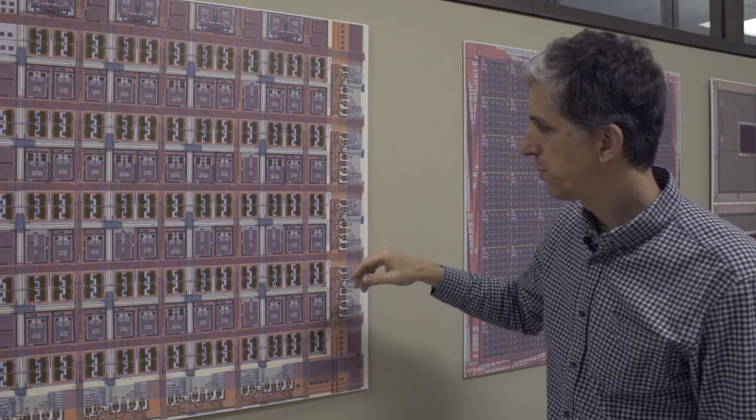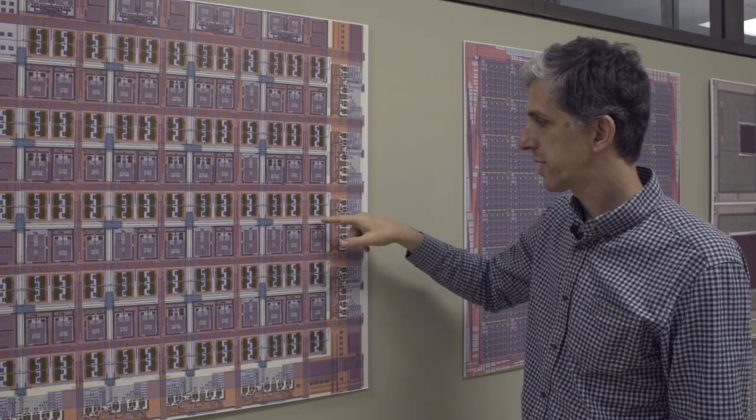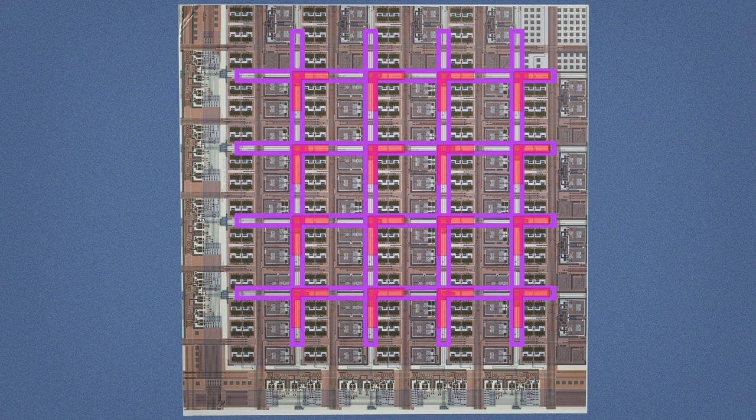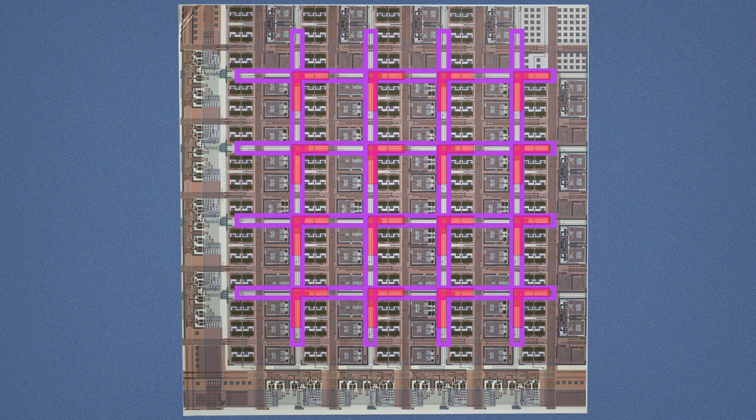Now wherever these qubits cross or intersect with each other we put a tunable coupling element that can be used to allow the qubits to influence each other in a programmable way.